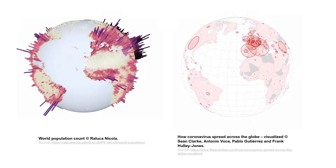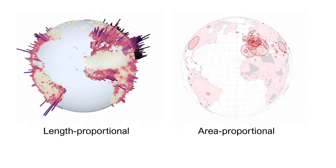Quantitative data visualization on virtual globes is intuitive and widespread. Visual primitives such as 3D bars and circles represent geographical points, and quantitative values are encoded to the length of the bar and the area of the circle.